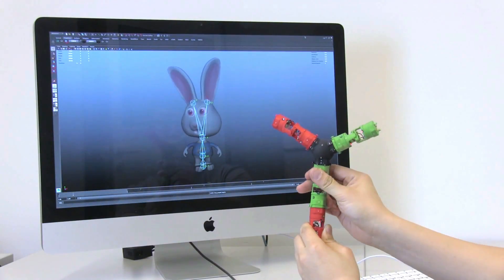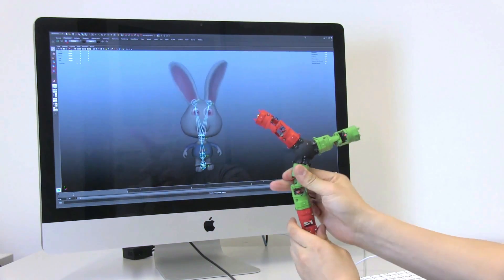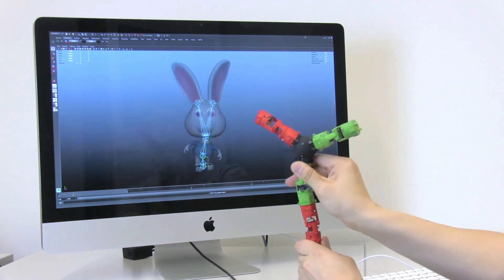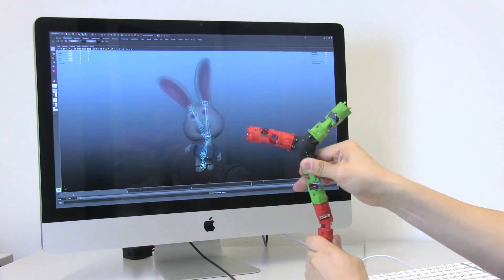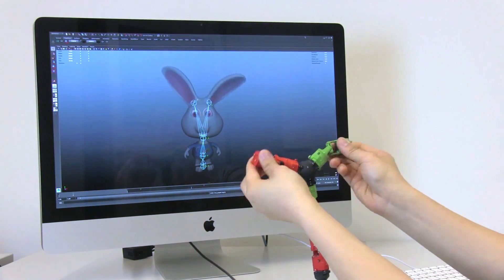For simple rigs, the algorithm finds the trivial one-to-one mapping between the device's sensors and the rig's degrees of freedom. Each chain of joints follows its endpoint in an inverse kinematic fashion.